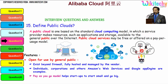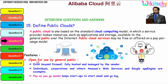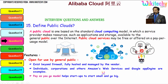Moving towards the public cloud definition: a public cloud is one based on the standard cloud computing model in which the service provider makes resources such as applications and storage available to the general public over the internet. Public cloud services may be free or offered on a pay-per-usage model. The features of public cloud include: it is open for use by the general public; it exists beyond the firewall; it is fully hosted and managed by the vendor. Individuals, corporations, and services like web services and Google App Engine are typical examples. Its pay-as-you-go model helps startups to start small and go big.